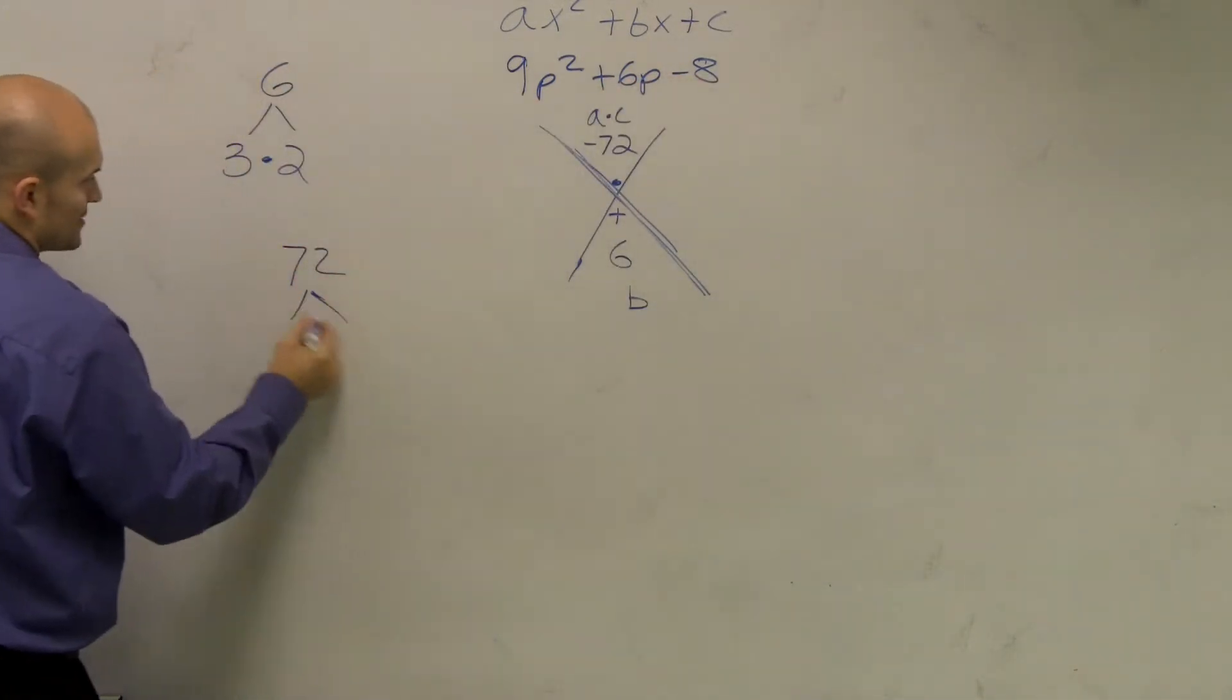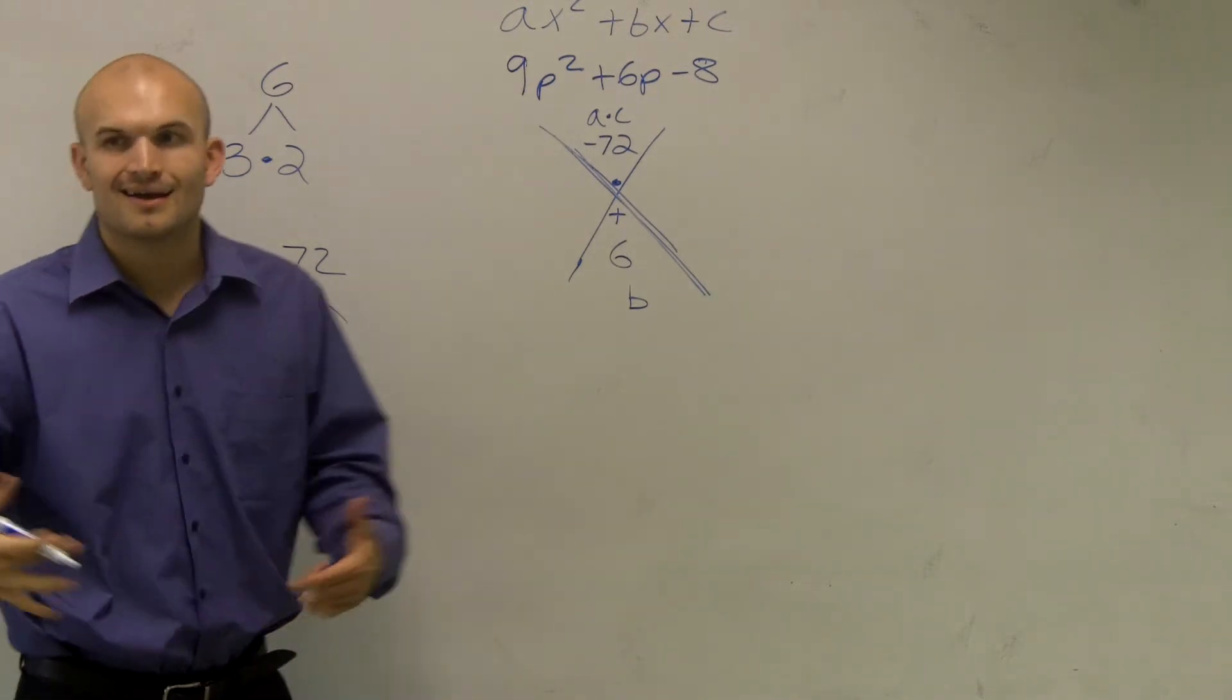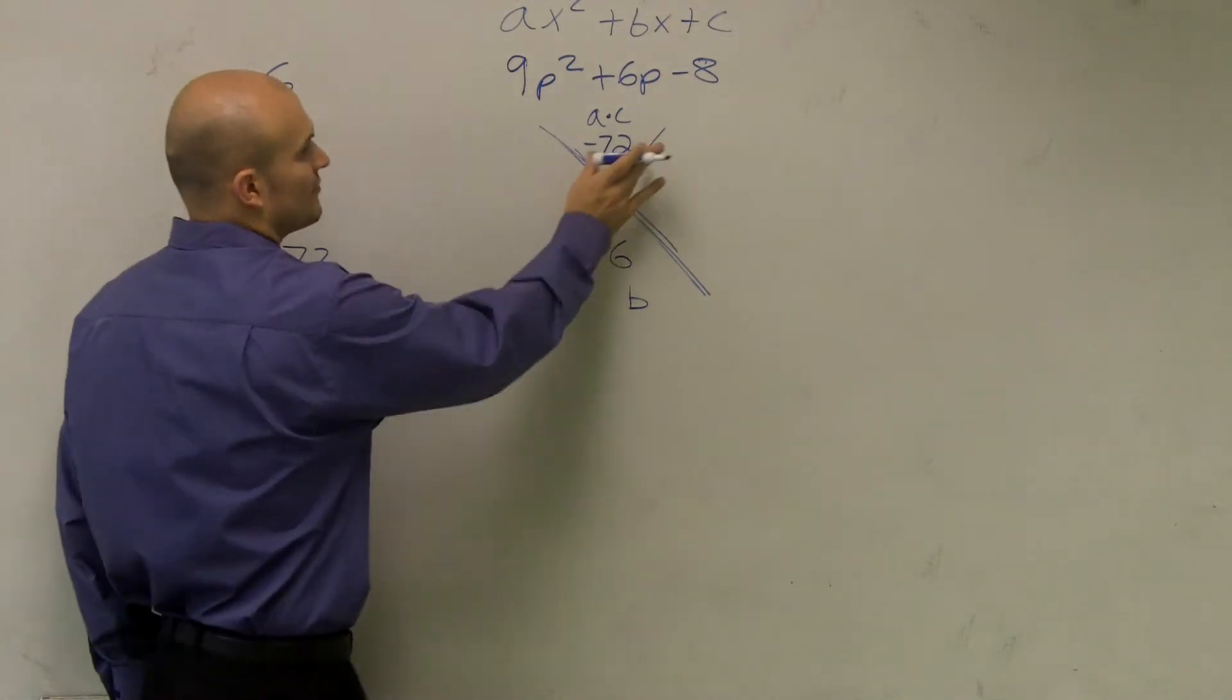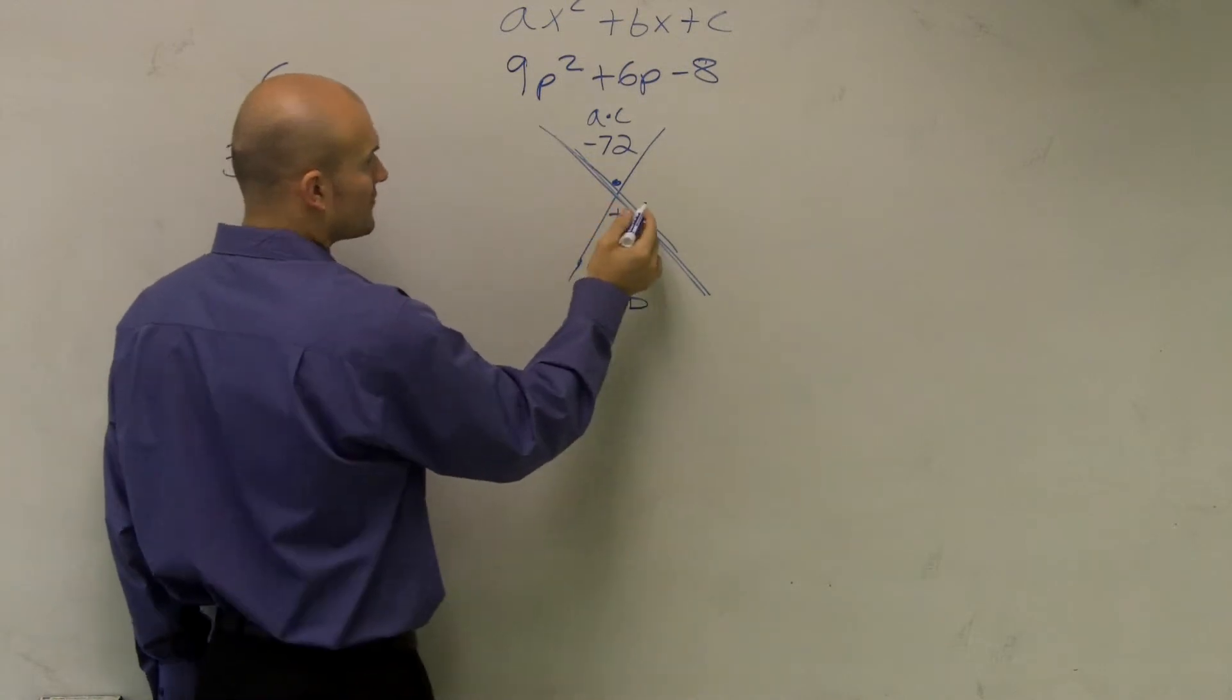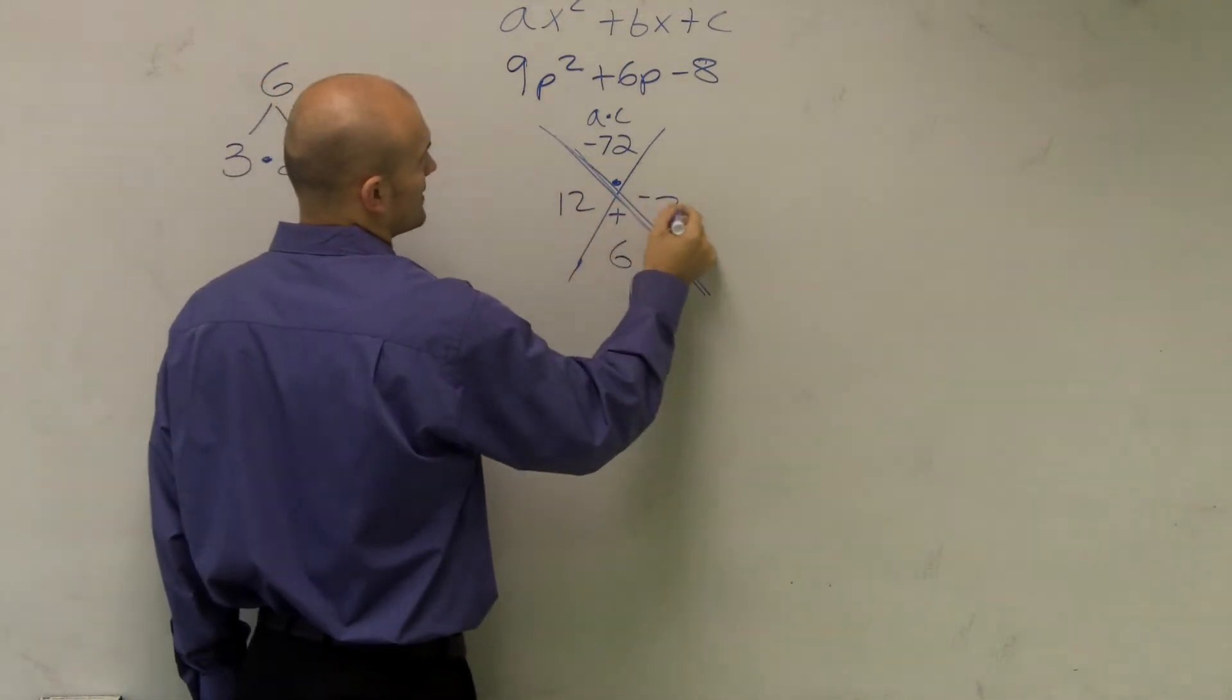So what you can do is you can look at 72 and do your little factors. Factor out, figure out all that they are. I don't have all day, so I'm just going to help you out right now. For here, they're going to have, for these two, it's going to be positive 12 and a -6.